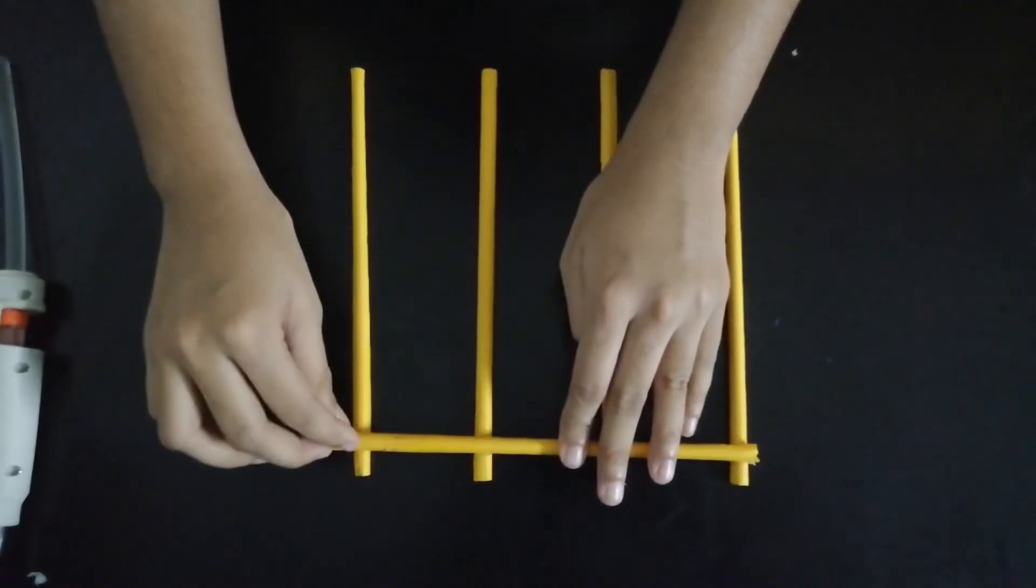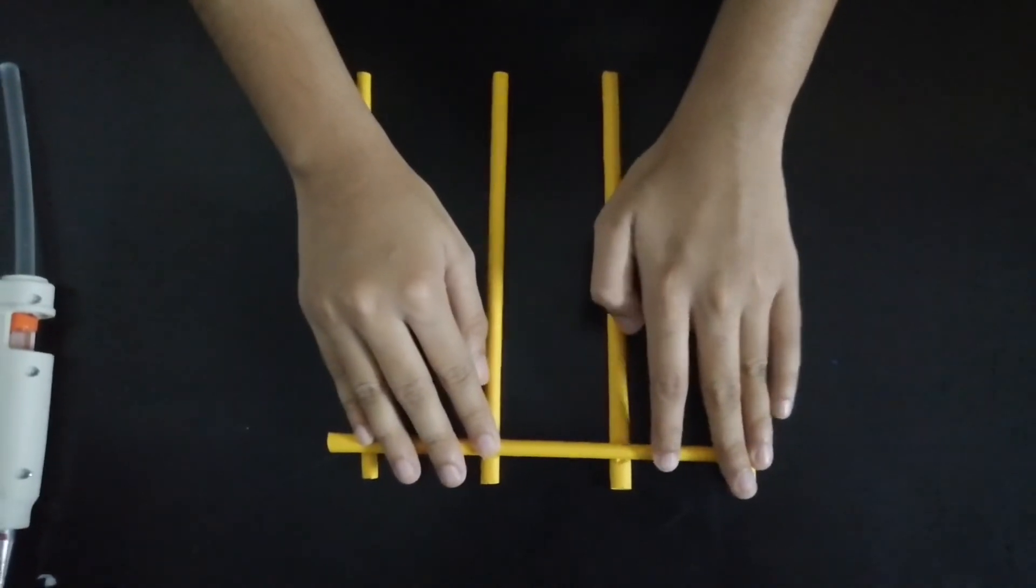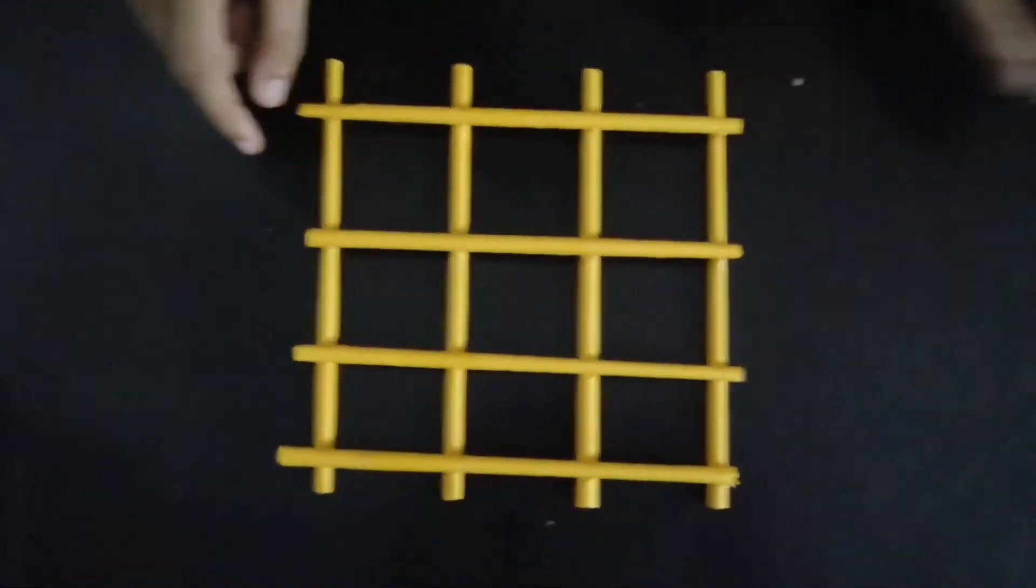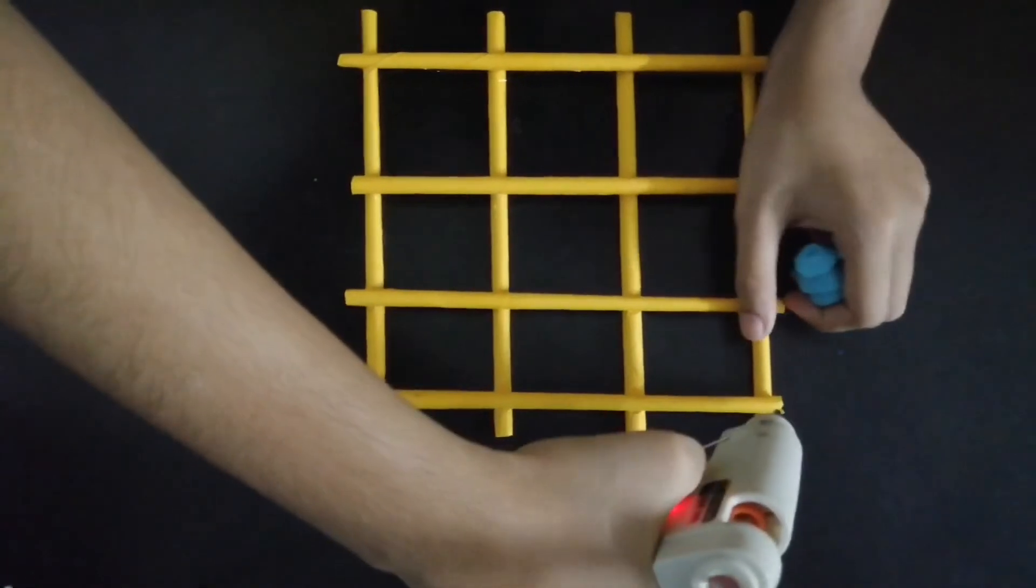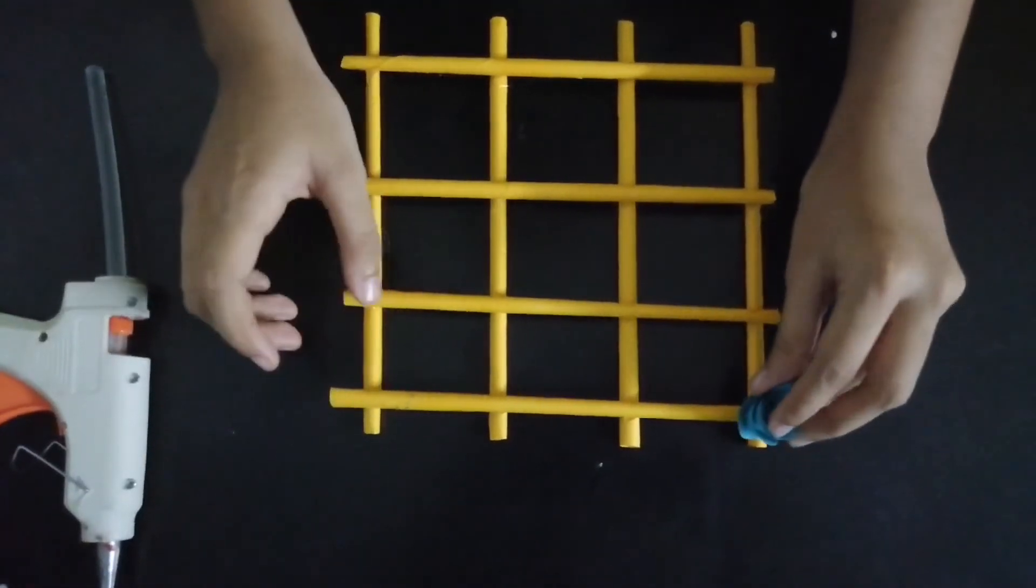We have to repeat this step four times, then stick all the paper rolls like this. Next procedure is to stick the roses. We have to stick them like this—put a little hot glue here and stick it.